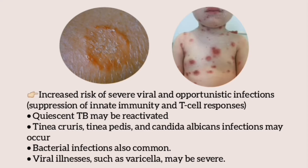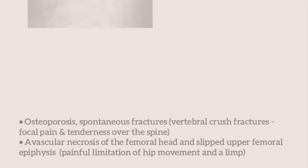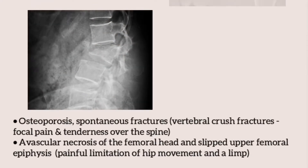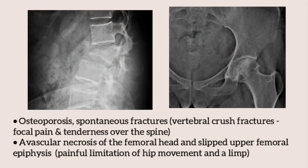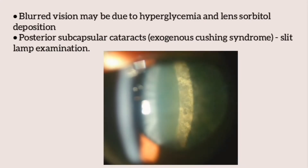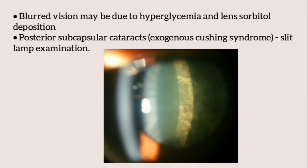Latent TB may be reactivated, and tinea cruris, tinea pedis, and Candida albicans infections may occur. Bacterial infections are also common, and viral illnesses such as varicella may be severe. Osteoporosis and spontaneous fractures — especially vertebral crush fractures — may occur, presenting with focal pain and tenderness over the midline of the spine. Avascular necrosis of the femoral head and slipped upper femoral epiphysis may also occur, presenting with painful limitation of hip movement and a limp. There may be blurred vision due to hyperglycemia and deposition of sorbitol in the lens.